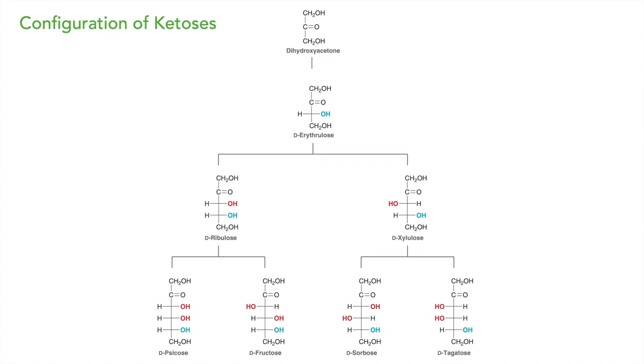This concludes the basic introduction about carbohydrates, covering D and L forms of sugar, aldoses, and ketoses. In the next class, we will study the cyclic form of sugars.